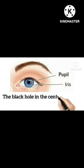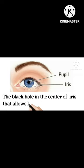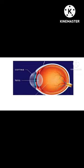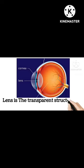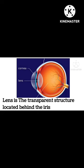The pupil is the black hole in the center of the iris that allows light to enter the eye. The iris adjusts the size of the pupil to control the amount of light that enters the eye. The lens is the transparent structure located behind the iris and in front of the vitreous body.